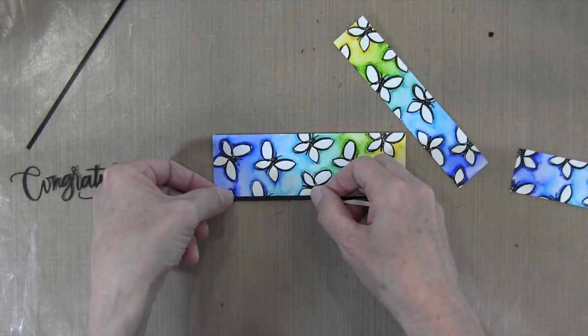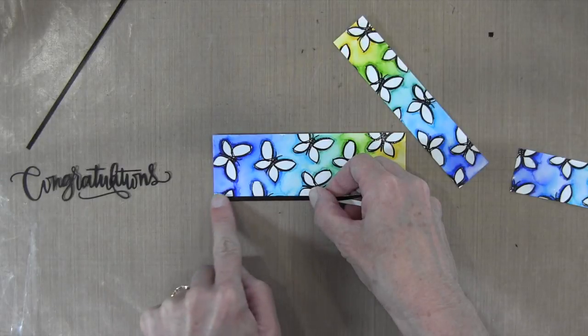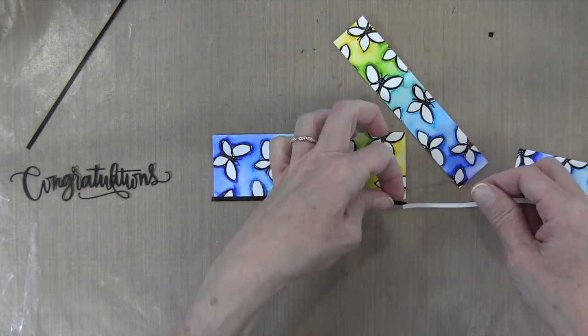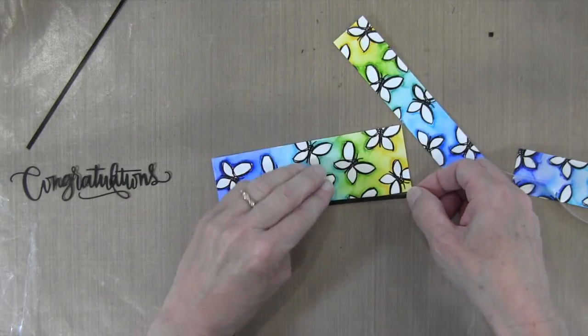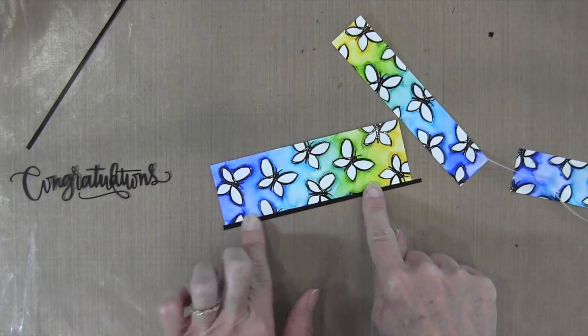I'm going to outline my sentiment with some black just to make it pop a little bit, and it kind of creates a nice finished edge for my watercolor panel. I'm going to put this all the way to the edge and then cut off the ends.